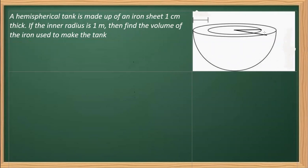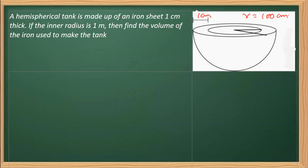I'm taking the inner radius, mentioned as small r, and writing it as 100 centimeters instead of one meter to reduce the calculation involved. The thickness is one centimeter, as shown in the figure. Adding the thickness to the inner radius gives the outer radius, which I'm indicating as capital R — that is 101 centimeters.